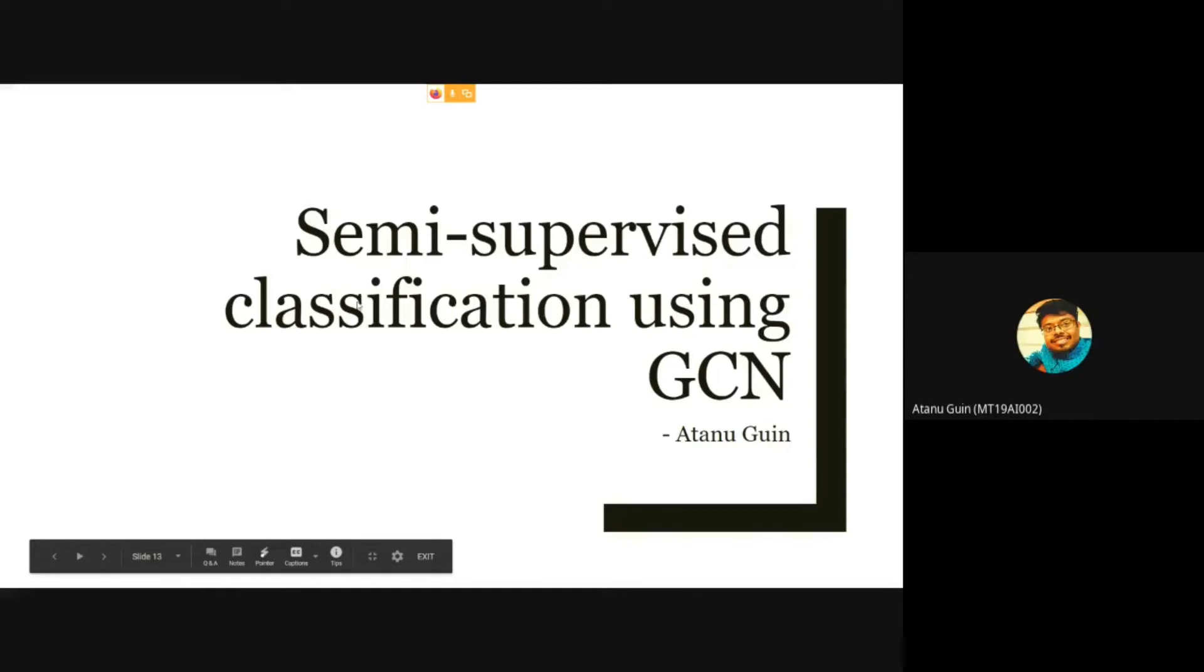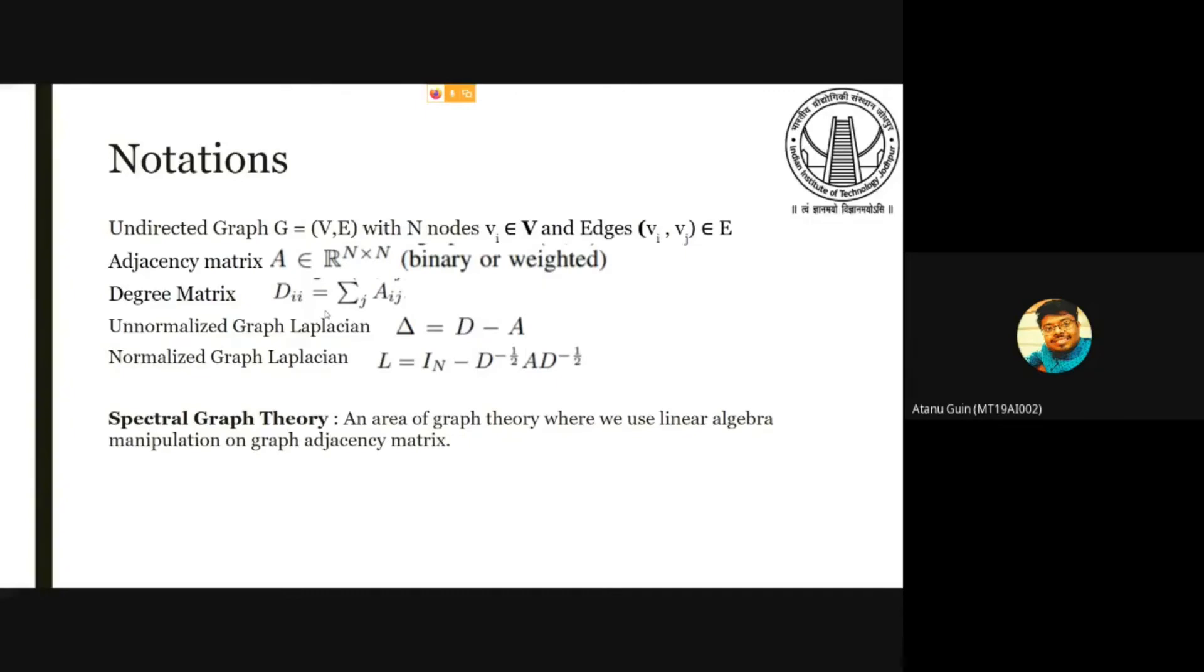Now I am going to talk about semi-supervised classification using GCN. The main theme is the same. We need to aggregate the neighborhood nodes for a single node. We are using spectral graph theory for this task. In spectral graph theory we are using the Laplacian method. The graph Laplacian is when we subtract the adjacency matrix from the degree matrix of a graph. We are using the normalized version of the graph Laplacian for this task.